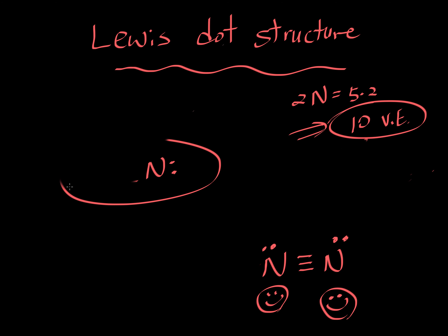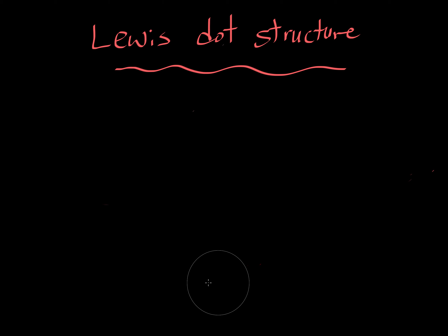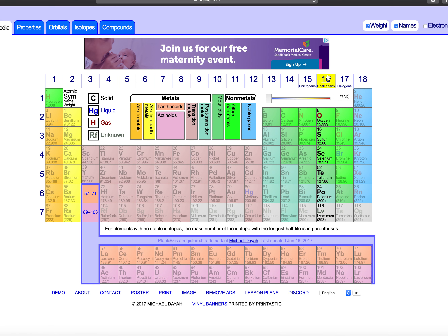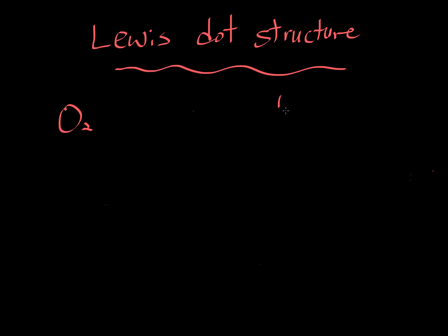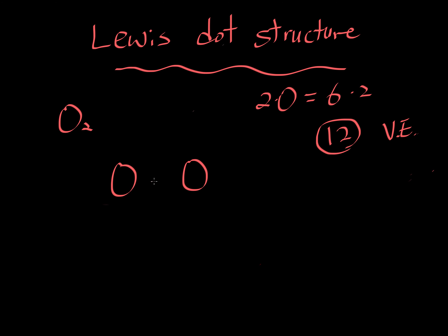Now let's talk about the next one: oxygen gas, O₂. When you look at the periodic table, oxygen is in group six, which means it has six valence electrons. But we have two of them, so we multiply by two. In total, we have 12 valence electrons. We do the same thing as before — they have to be attached, so draw one line. One line represents two electrons, which means we have 10 more to use.